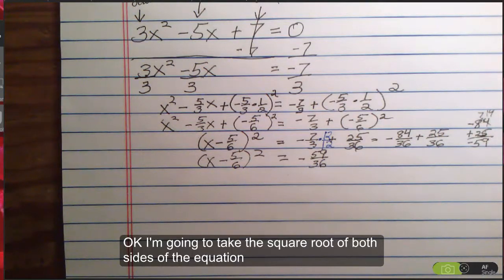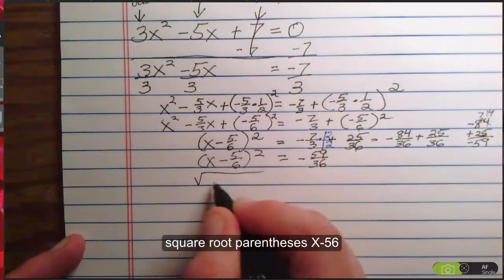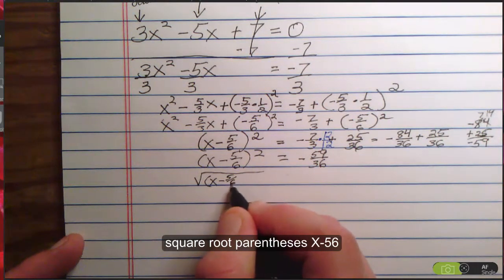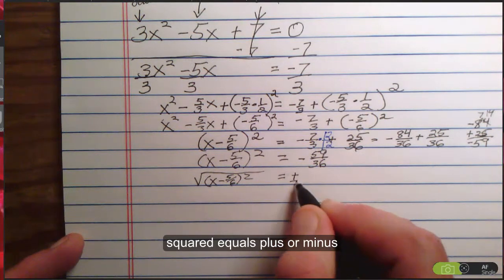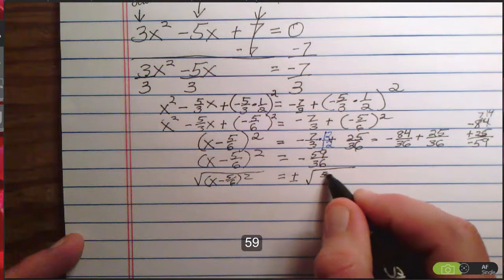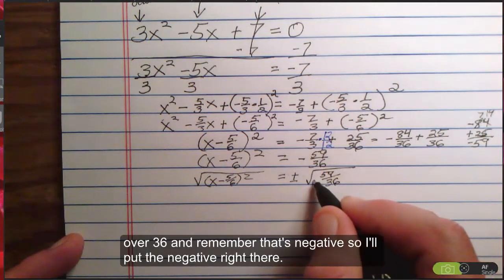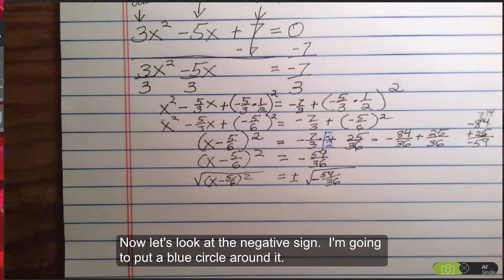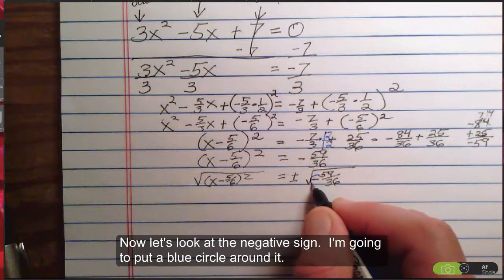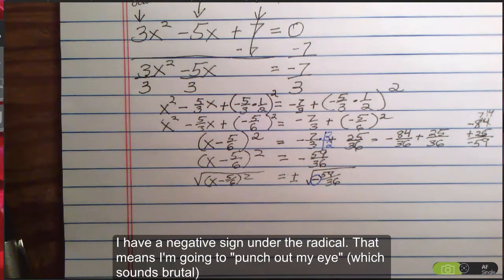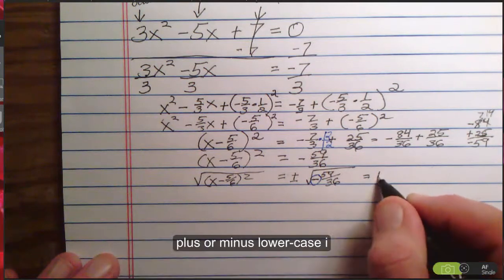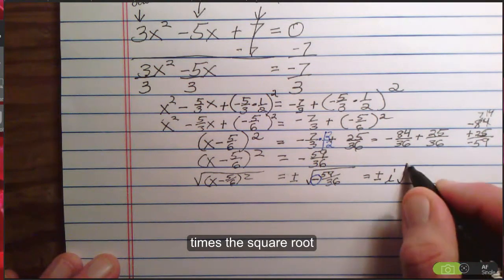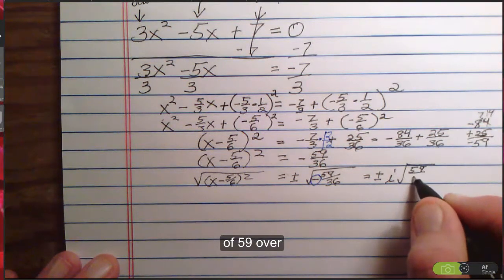Okay, I'm going to take the square root of both sides of the equation. Square root, parentheses, x - 5/6 squared equals plus or minus square root, 59/36. And, remember, that's negative. So, I'll put the negative right there. Now, let's look at the negative. I'm going to put a blue circle around that. I have a negative under the radical. That means I'm going to punch out my i. Plus or minus i times the square root of 59/36.